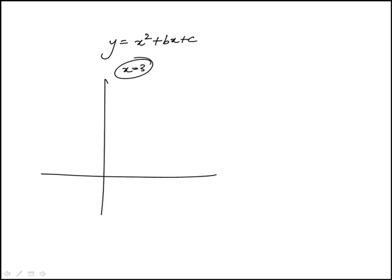We're told that in the x-y plane, the graph of this quadratic function is symmetric about the line x equals 3. So that vertical line is x equals 3.